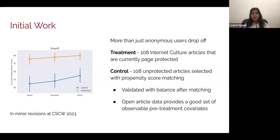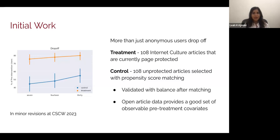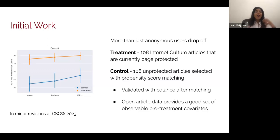To put this into context, we created a control set using propensity score matching. The drop-off shown in blue is significantly lower in the control set. Moreover, the average number of anonymous users in our treatment set was about 24% of pre-intervention users, so we can see that it's very clearly more than just anonymous users — who are typically the bad actors — who are dropping off or stopping editing after a page is protected.